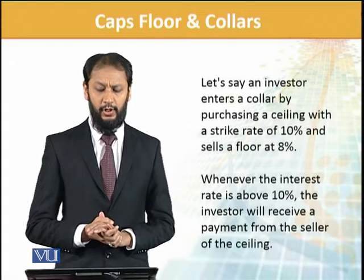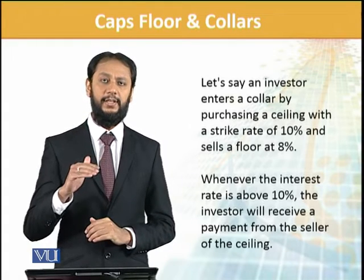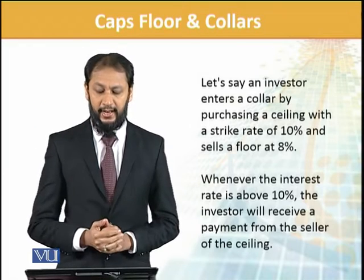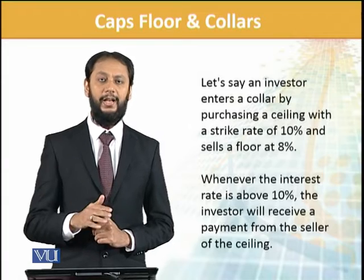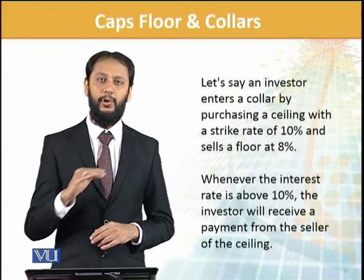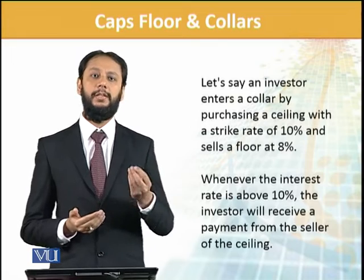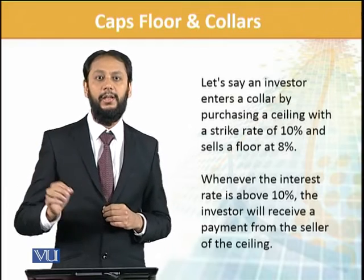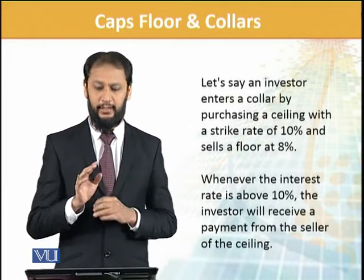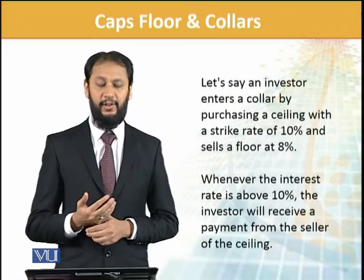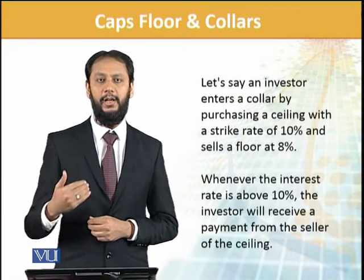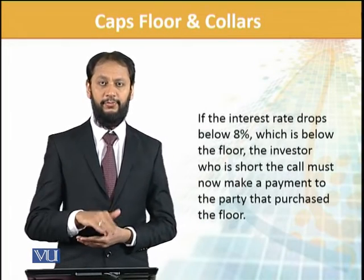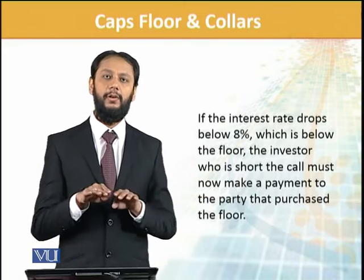Let's say investor enters into a collar purchasing a ceiling with a strike price of 10% - ceiling उसने कर दी 10 पर, इसका मतलब जितना भी बढ़ जाए हमने 10 ही देना है - and sells a floor at 8. Floor at 8 means if rate goes to any level below, we'll be bearing 8. अगर interest rate 2% हो गया तो bank को तो 2% देना है, लेकिन 6% दूसरी party को देना पड़ेगा जिससे आपने floor लिखके दी - तो net cost 8 ही। When interest rate is above 10, the investor will receive payment. If it goes below 8, then we will be paying - effectively हमें cost पड़ जाएगी फिर 8.